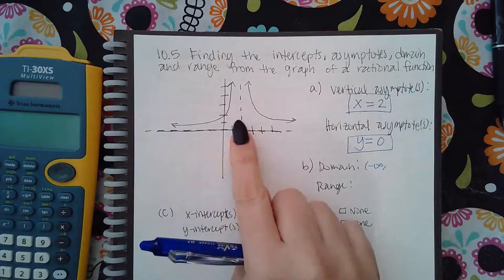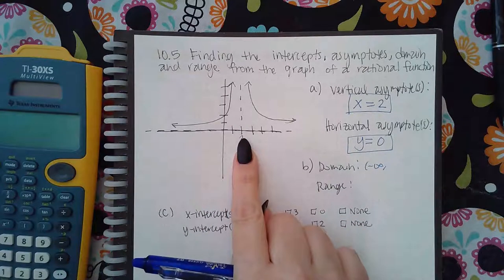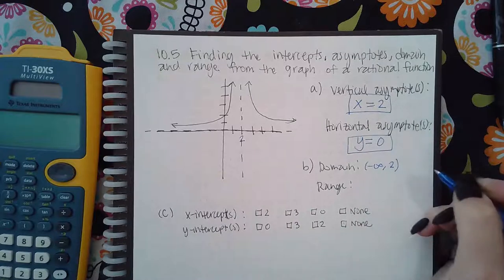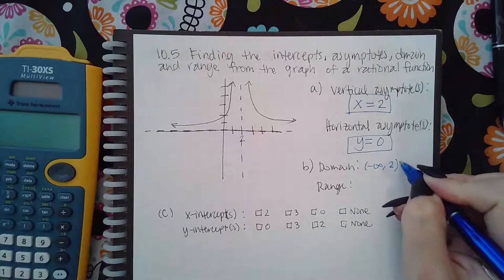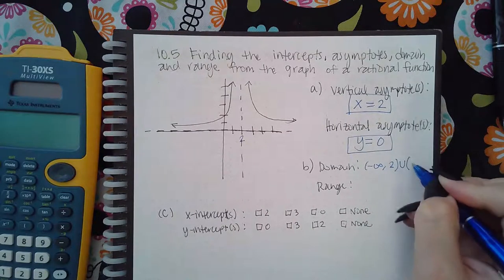So it'll go up to two but won't touch it, so use a parenthesis. Then on the other side of two it'll get really close, but then it goes to the right forever, which means positive infinity.